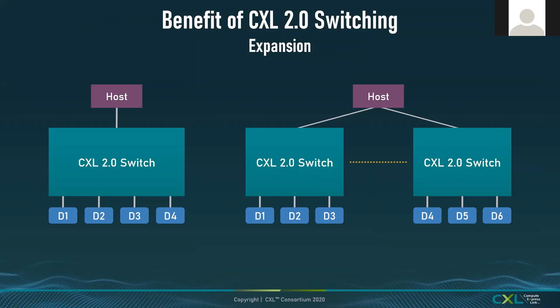CXL 2.0 addresses fan-out by introducing one layer of switching. Devices underneath each switch can be caching or memory-type devices. One layer of switching still provides a very large fan-out — each host may have multiple CXL links, each switch can have multiple subordinate links, allowing very many devices to connect to one host.